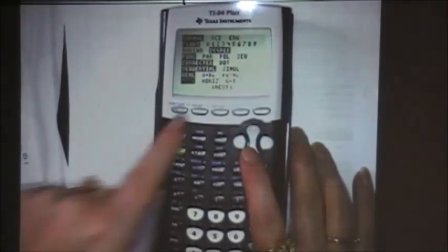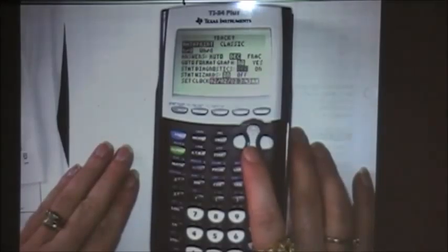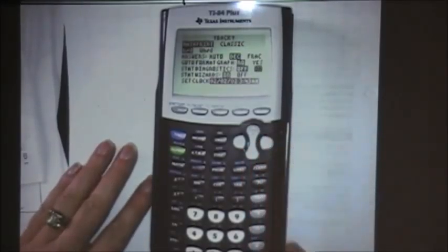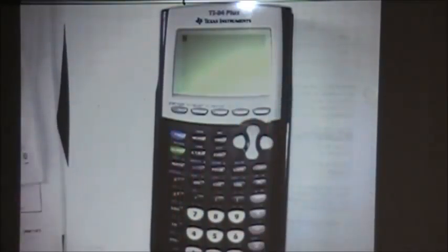and arrow down, see down here where it says next, you want to arrow to the next page, and see where it says stat diagnostics? We're going to turn those on. And then we're going to go back, if you hit second and mode, that takes you back to your main page.